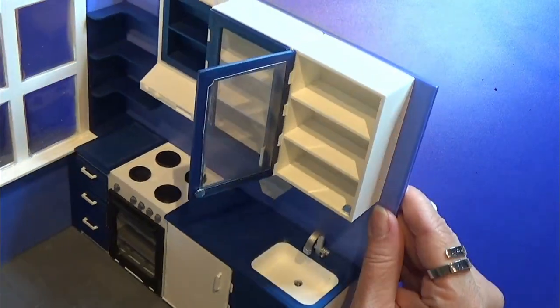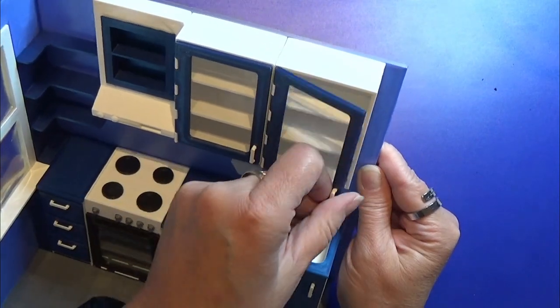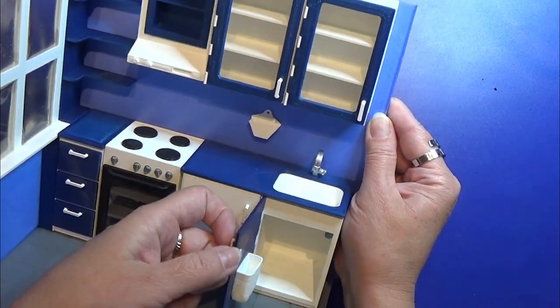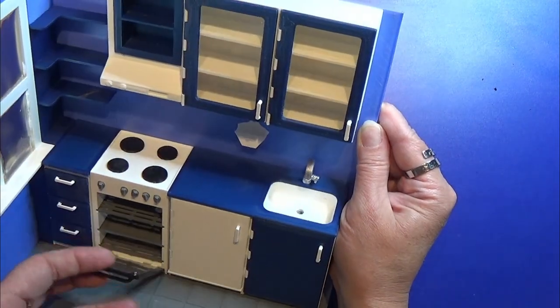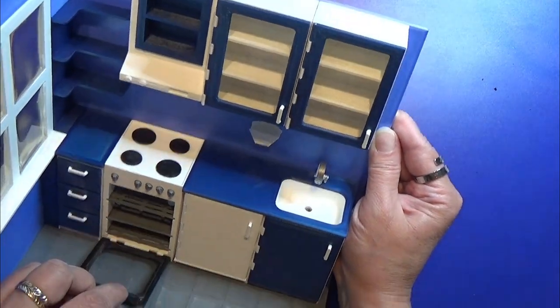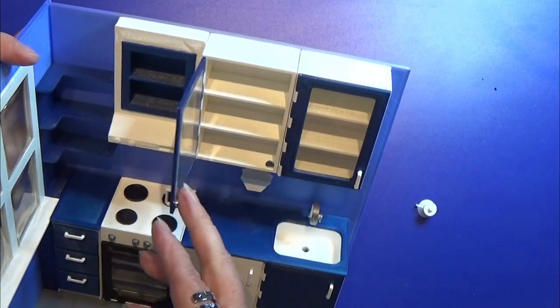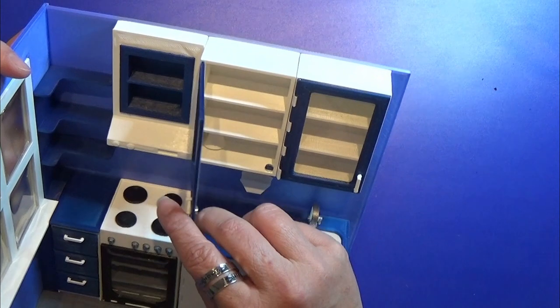I ended up gluing a magnet inside the cabinets and on the door of the cabinets in the place where the handles are. This way they close a bit better than before. So I'm just going to put that into the shelf in the upper cabinet.